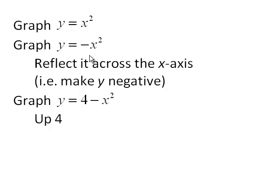When we do y equals negative x squared, it's going to make the old y's negative so it's going to reflect it across the x-axis. When we add in the 4, that means it's going to move that piece up 4. So let's go look at WileyPlus.